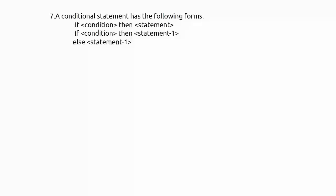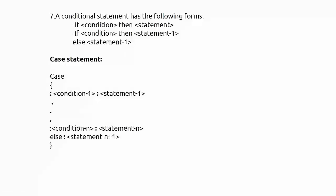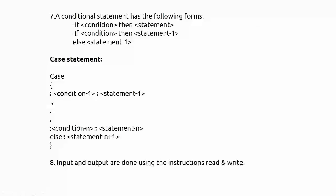Conditional statements take the form: 'if (condition) then { statement }', or with else: 'if (condition) then { statement } else { statement }'. There is also a case statement similar to switch-case in C: 'case { condition1: statement1; condition2: statement2; ... else: default statement }'. For input and output, you use the keywords read and write — for example 'read a, b' to input values and 'write c' to print a value.